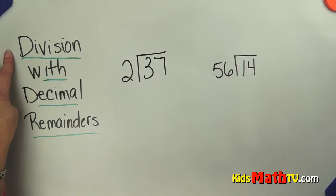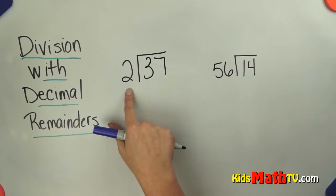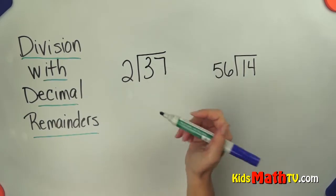In this lesson you will learn about division with decimal remainders. So we have 37 divided by 2, so I can do this division.